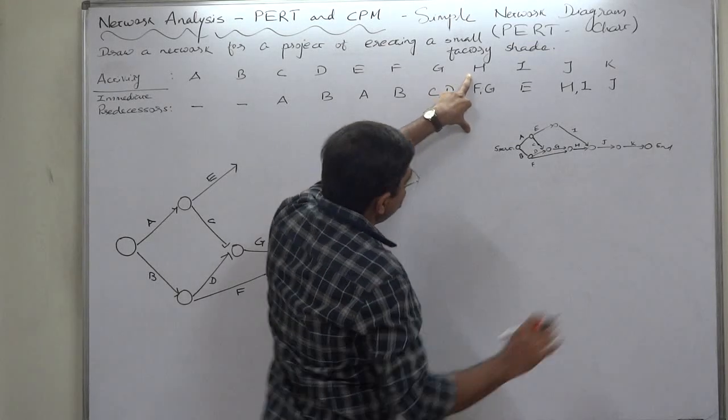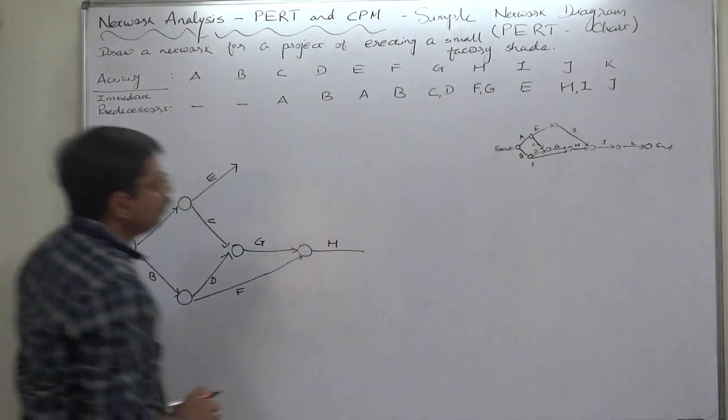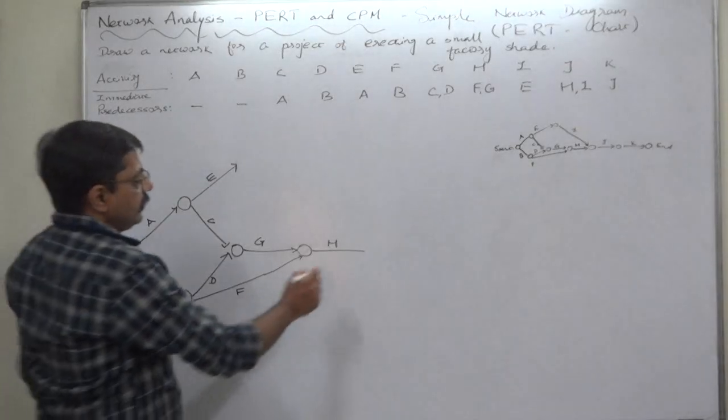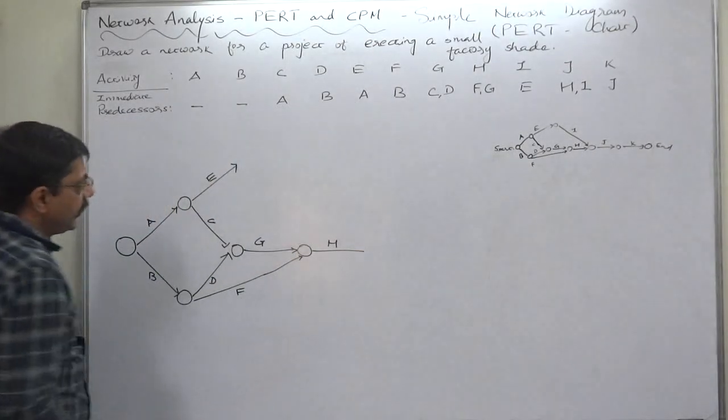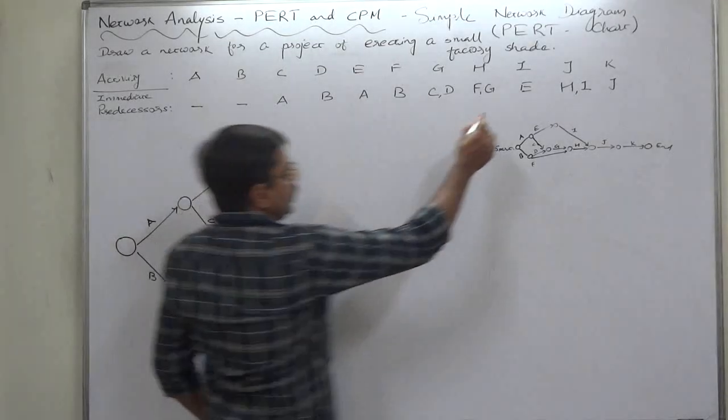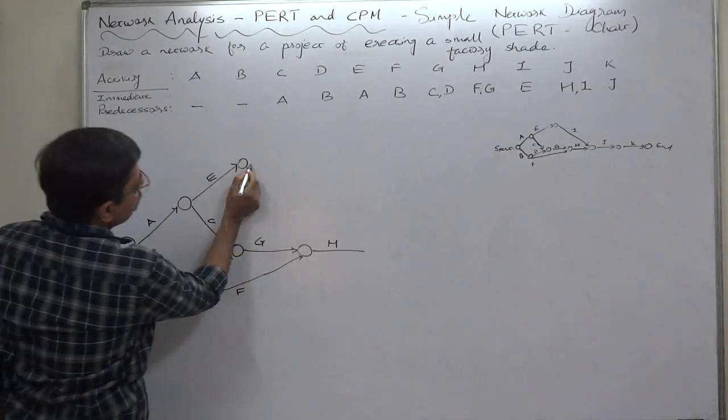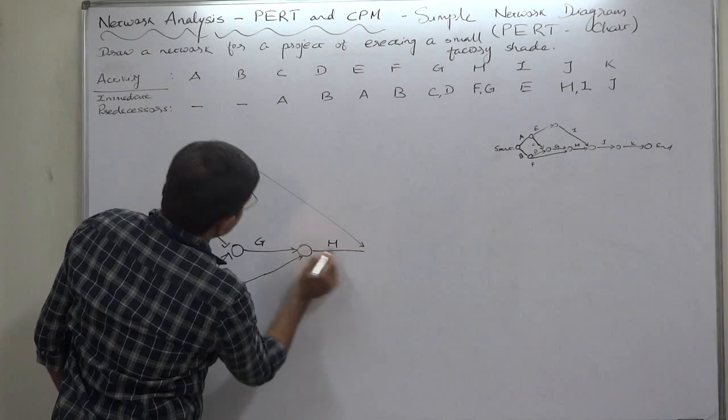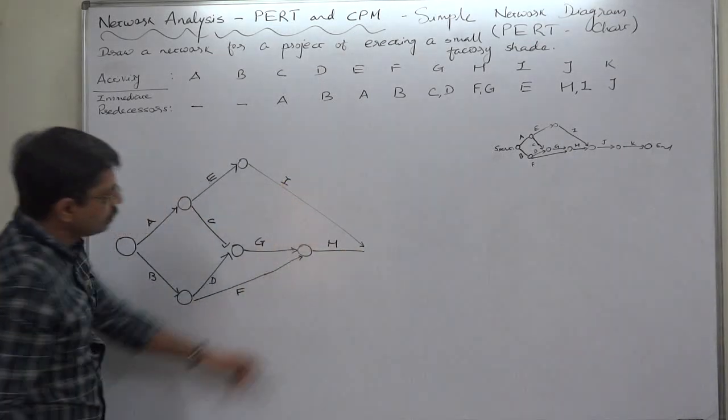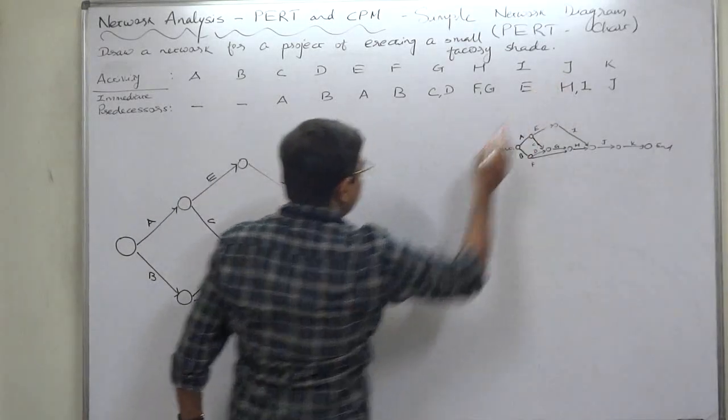Yes, only one—J—but together with I. So we need I before completing the arrow. The predecessor of I is E, that is here. So now we can draw an arrow something like this, because I and H both are common predecessors of activity J.